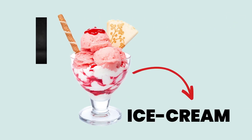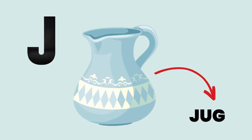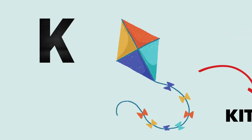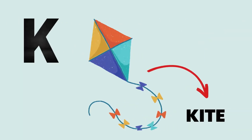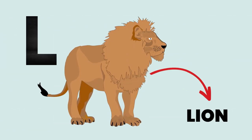I for Ice Cream. G for Jug. K for Kite. L for Lion.